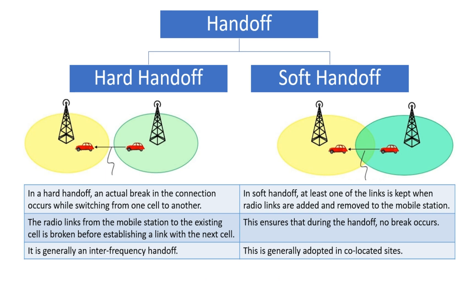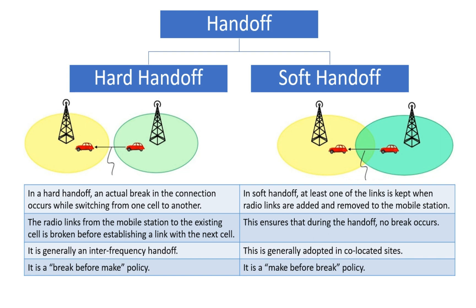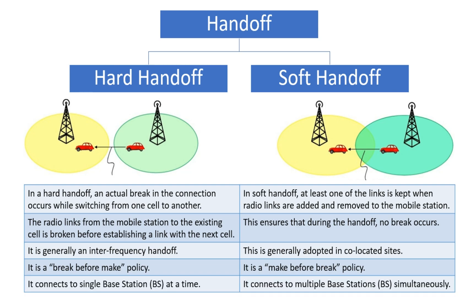Hard handoff is generally an inter-frequency handoff, whereas soft handoff is generally adopted in co-located sites. Hard handoff is a break before make policy, whereas soft handoff is a make before break policy. Hard handoff connects to a single base station at a time, whereas soft handoff connects to multiple base stations simultaneously.